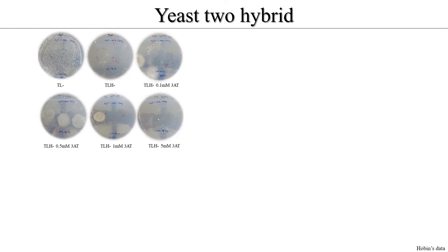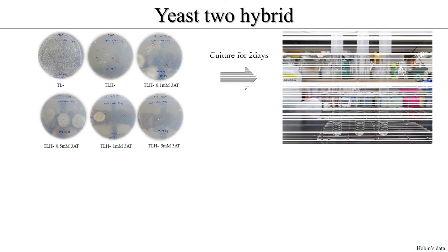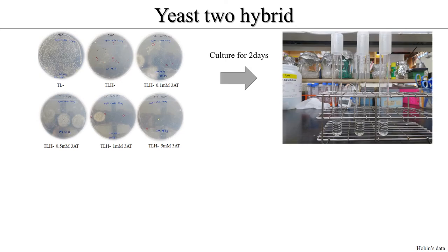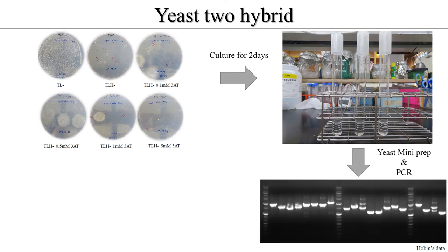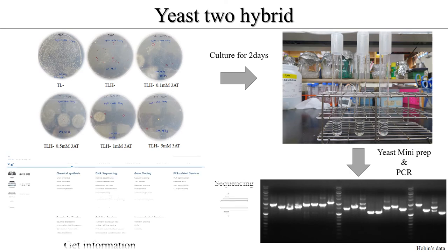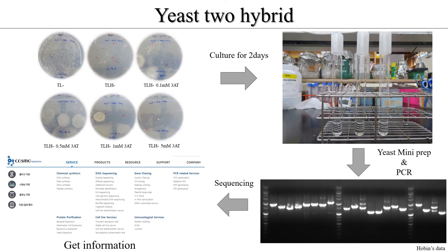First, several colonies will be selected and grown on a new plate for three days. After that, we should grow it in a test tube containing TLH-liquid for two days. Then we check whether the plasmid we picked is AD throughout the mini prep. If this is not the AD plasmid, it will not amplify when we perform PCR using a specific primer. Finally, after sending the information to the sequencing company, we can get the information of which gene interacted with our gene.